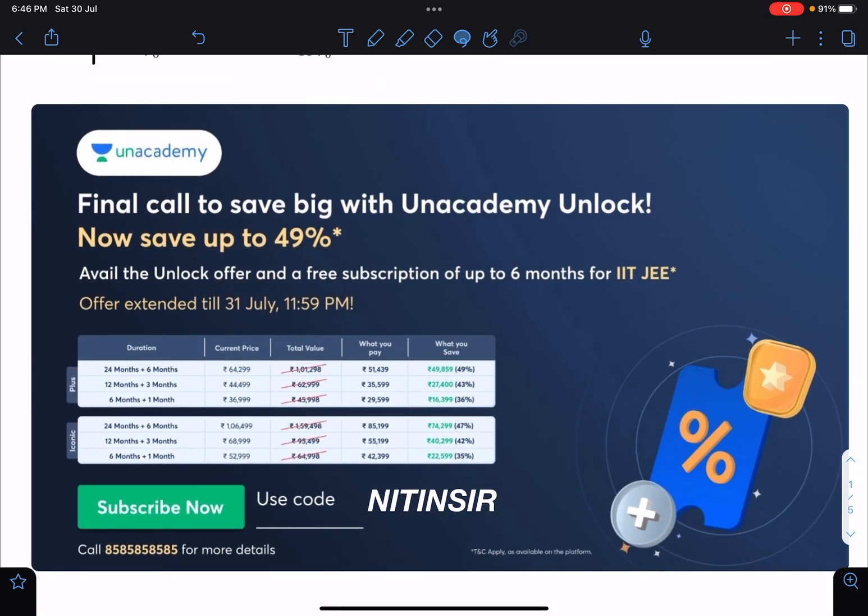You can see here you can save up to 49% on Unacademy subscription. 24 months plus 6 months is 49% discount. Similarly, 12 months and 3 months extra at this discount. These are the final prices, so you can see there is a lot of difference.